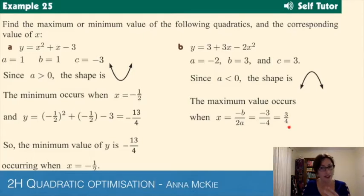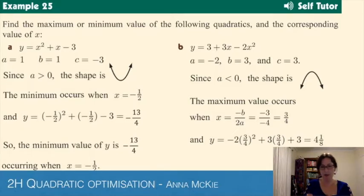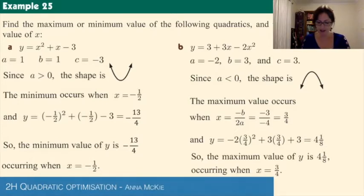And what y value will that give us? We substitute that into the function and we get 4 and 1/8. Sometimes we use mixed numbers, more often we use improper fractions. So the maximum value of the function is 4 and 1/8, occurring when x = 3/4.